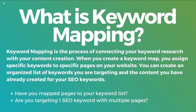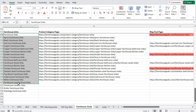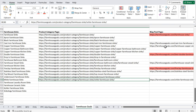Coming back over to keyword mapping, the main questions you really need to ask yourself are: have you mapped pages of content to your keyword list? It could be pages of products — whether it's a product category page or a blog post, that's what you want to be mapping to your targeted keywords. You can also link individual product pages to a keyword list if it's a very popular product. The other thing is: are you targeting one SEO keyword with multiple pages? By making sure you don't target the same keyword multiple times, you can avoid keyword cannibalization and optimize multiple pages into just one page of content.